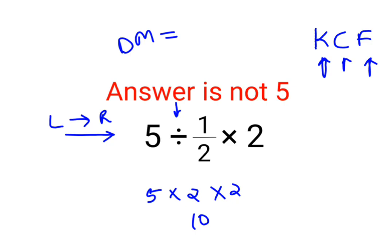So we have 5 multiplied by 2 which is 10 multiplied by 2. Answer for this question is supposed to be 20.